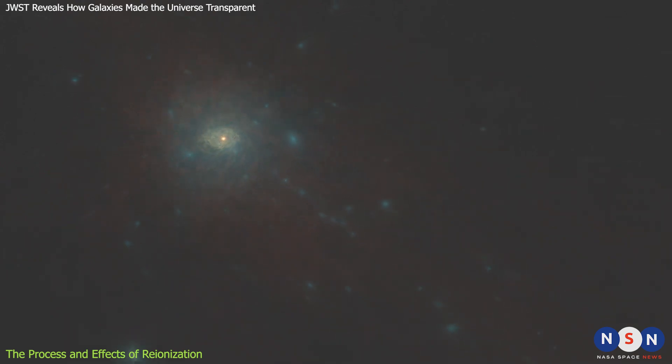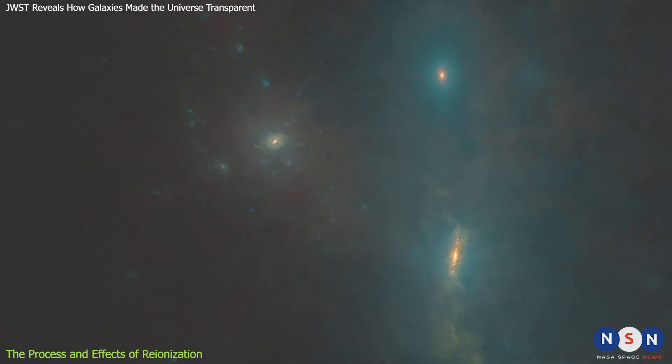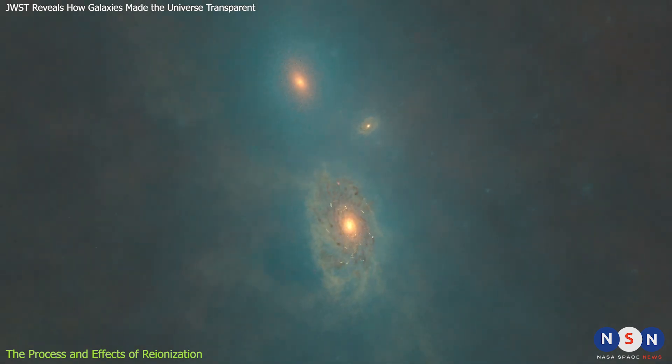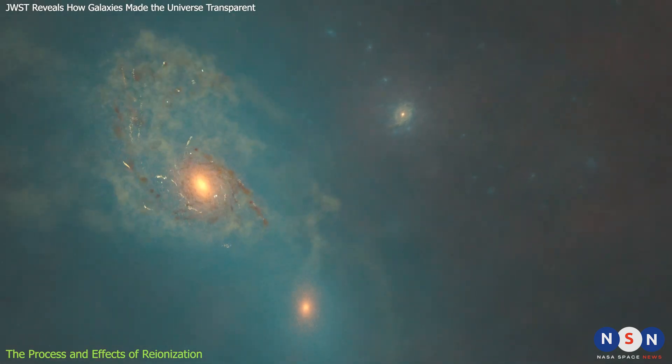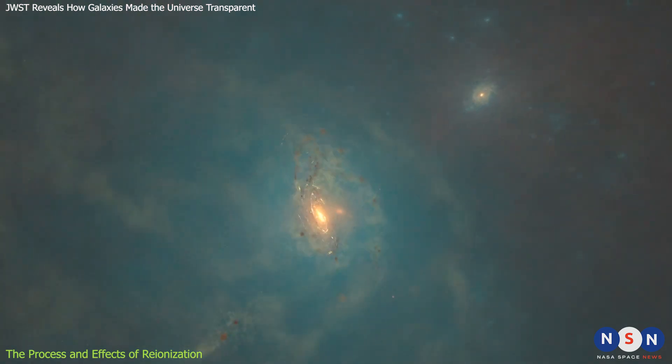Re-ionization was completed about one billion years after the Big Bang, when almost all of the hydrogen atoms in the intergalactic medium were ionized. This marked a major transition in the state of matter in the universe, as well as in its appearance and structure. Re-ionization also had significant effects on galaxy formation and evolution, since it changed the temperature and pressure of the gas that could collapse into new stars and planets.